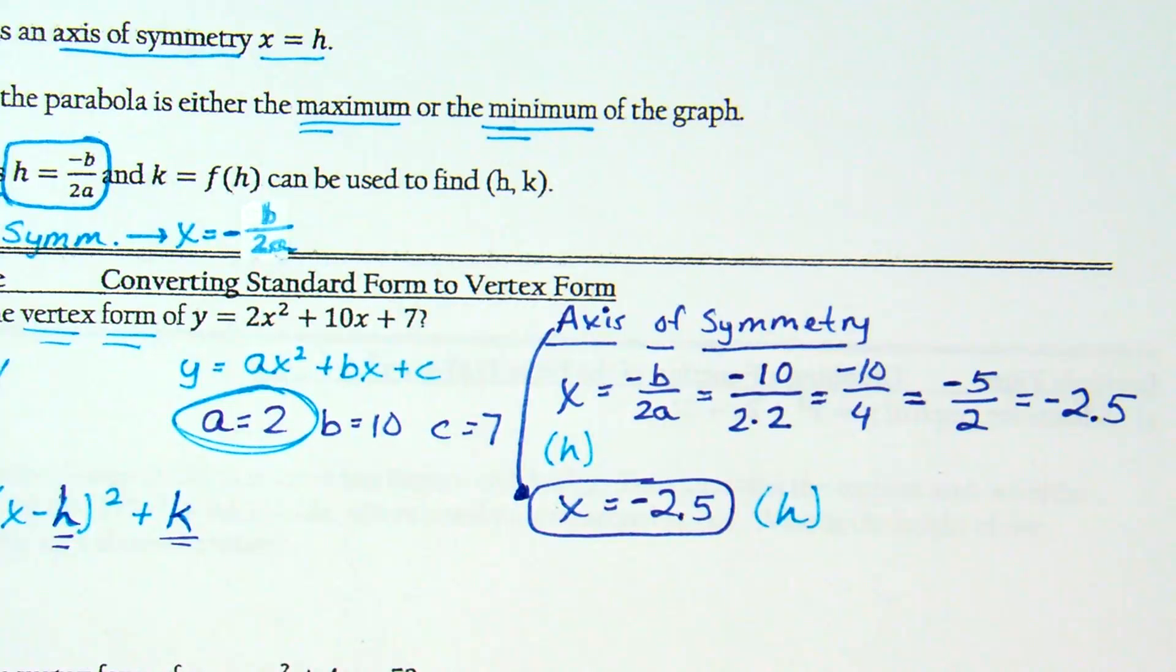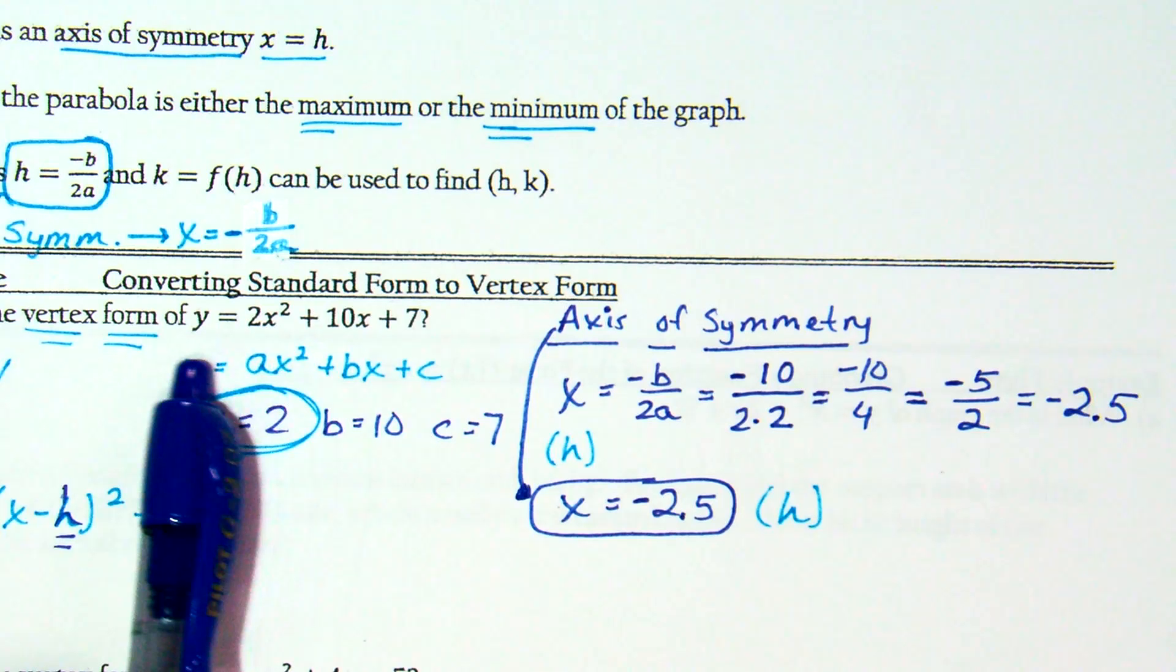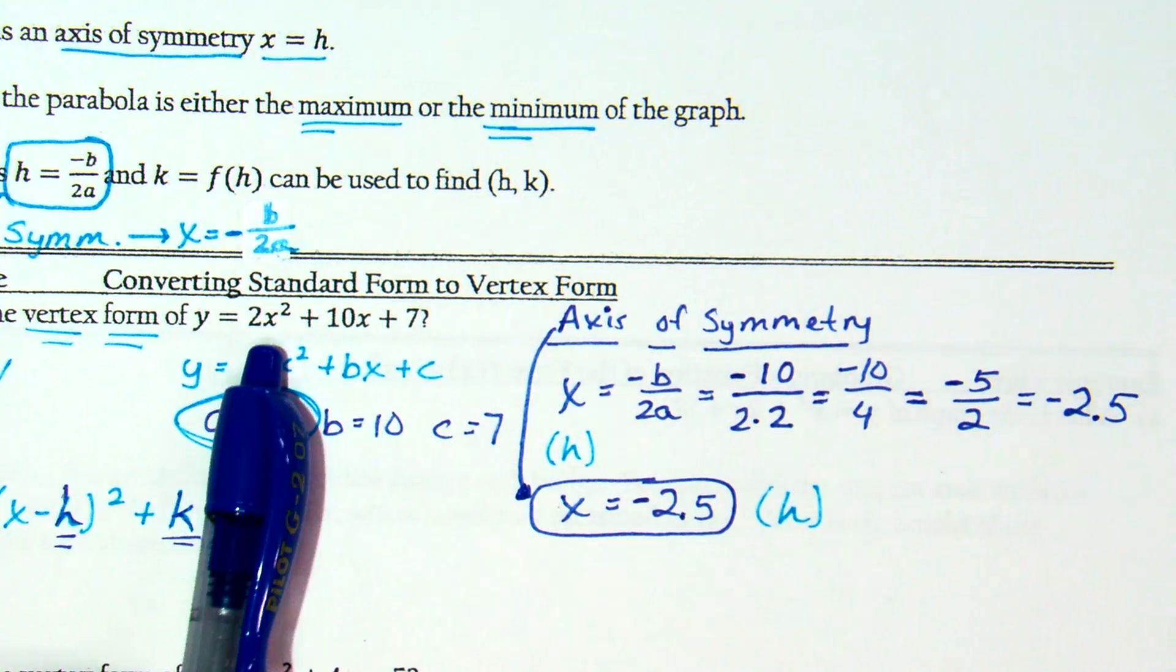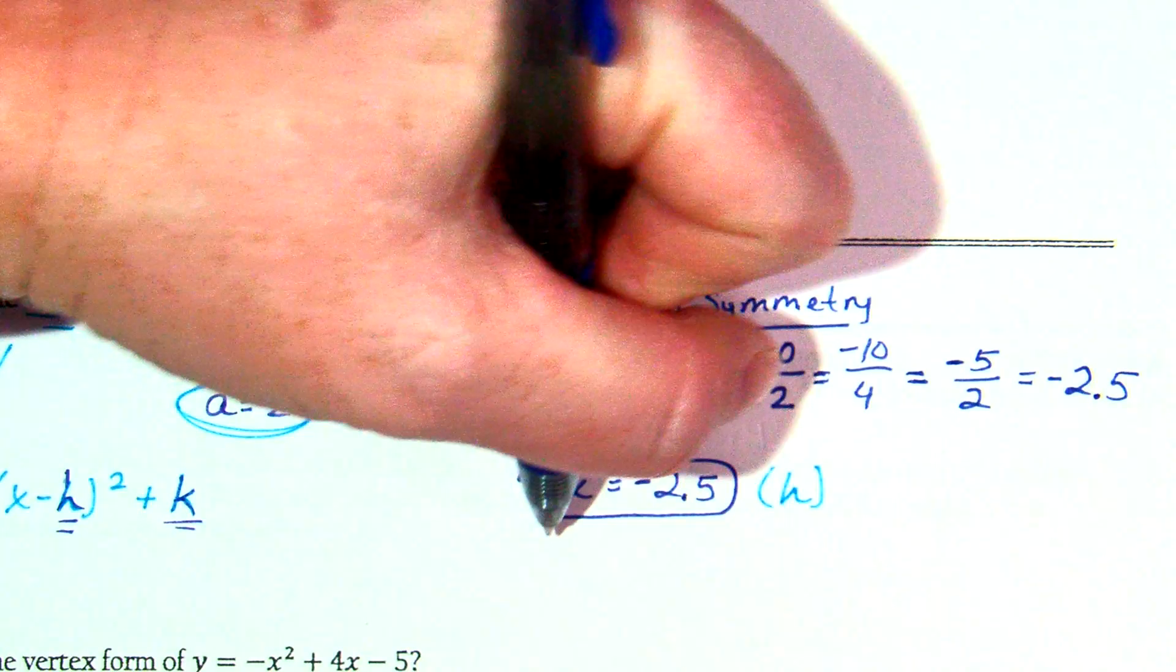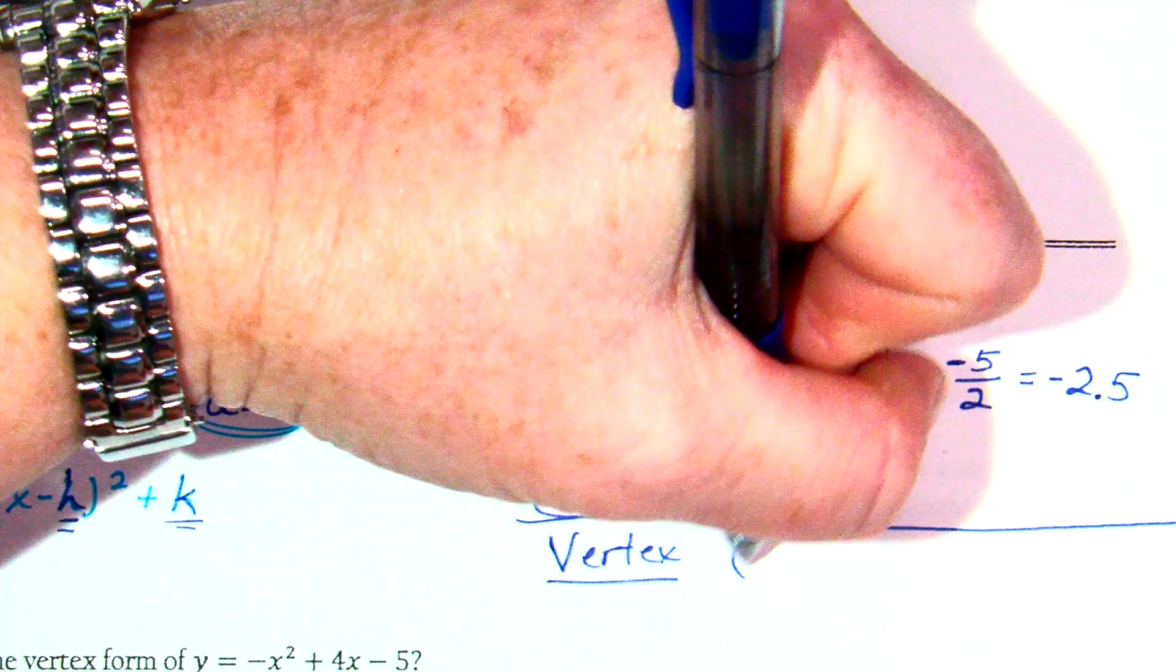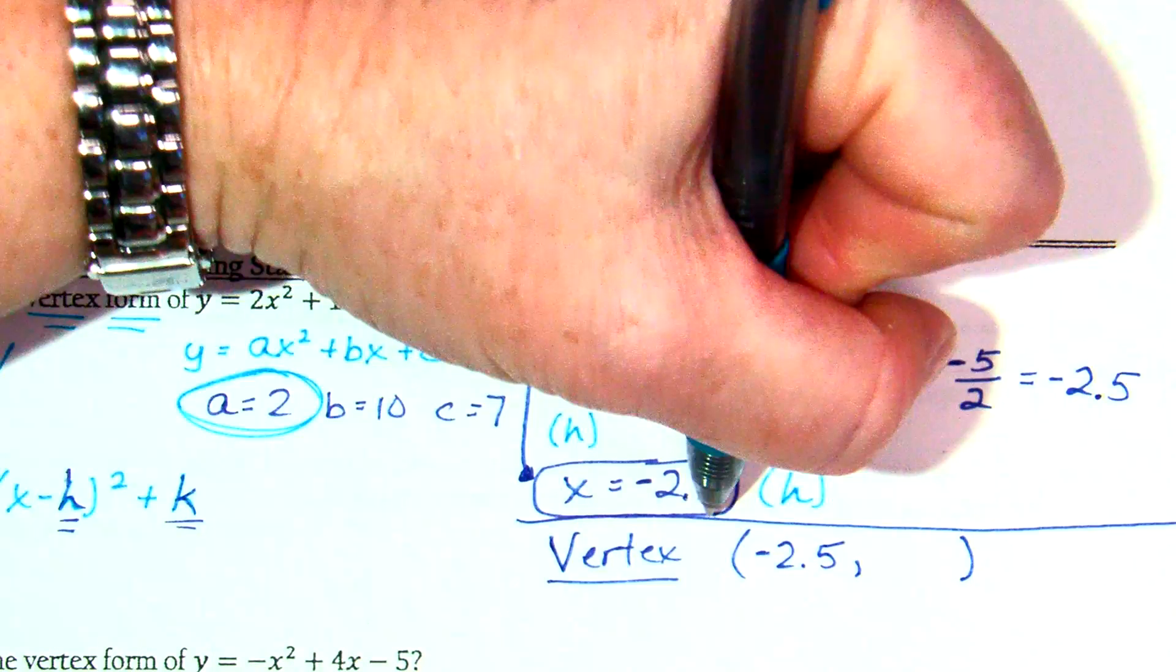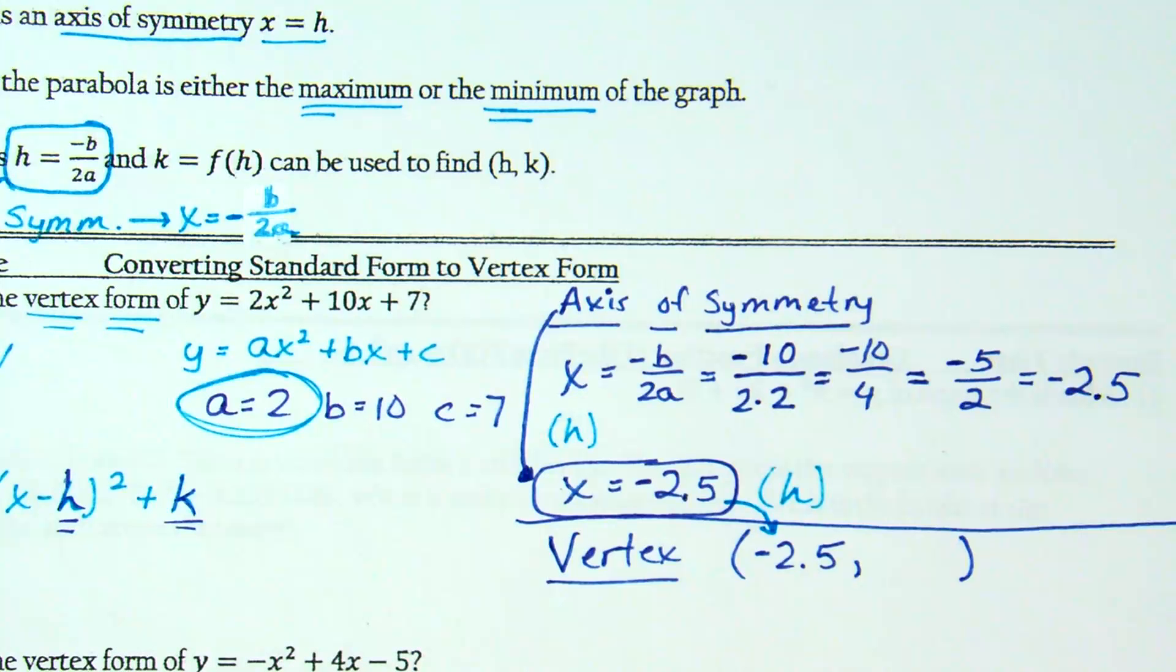If that's the axis of symmetry, that's h because that is the first half of my vertex. So I now know a, I now know h. If I know the first half of my vertex, how can I find the second half of my vertex? Plug it in. If I know x and I have a standard form here, we can plug that x in to get our y. Right now I'm trying to find my vertex. I already know my vertex is negative 2.5 comma something.